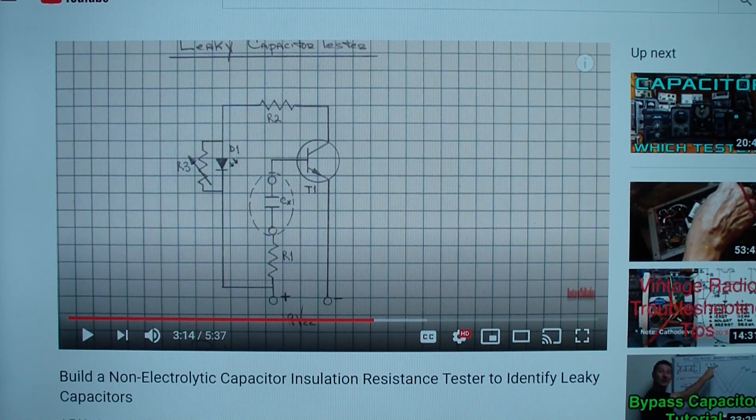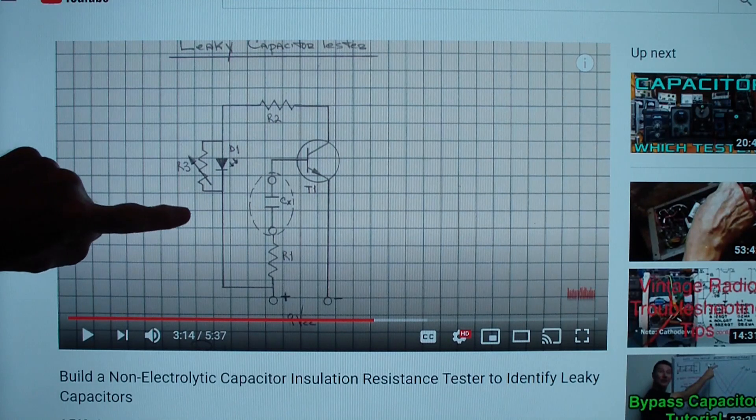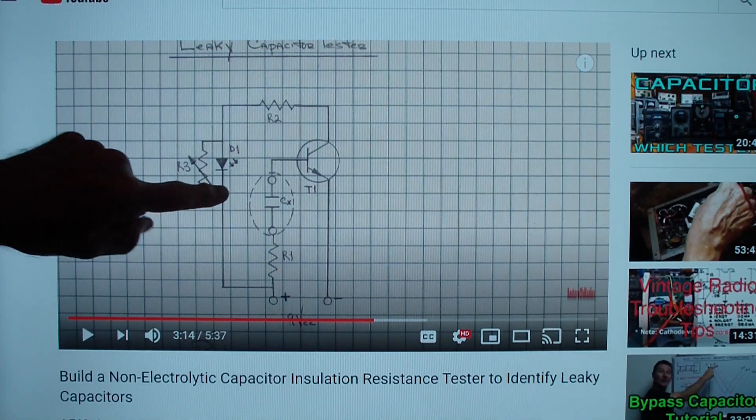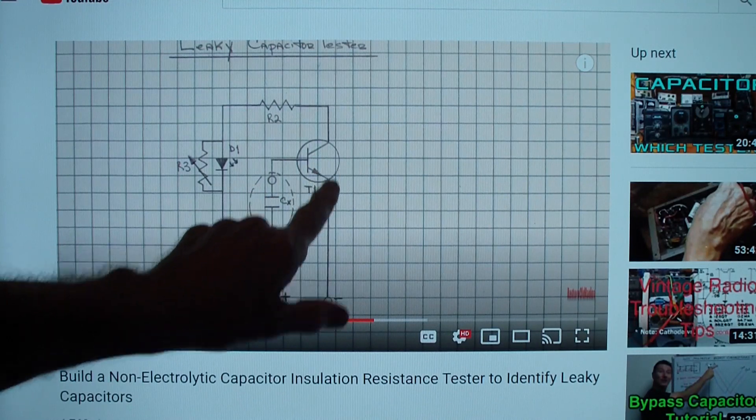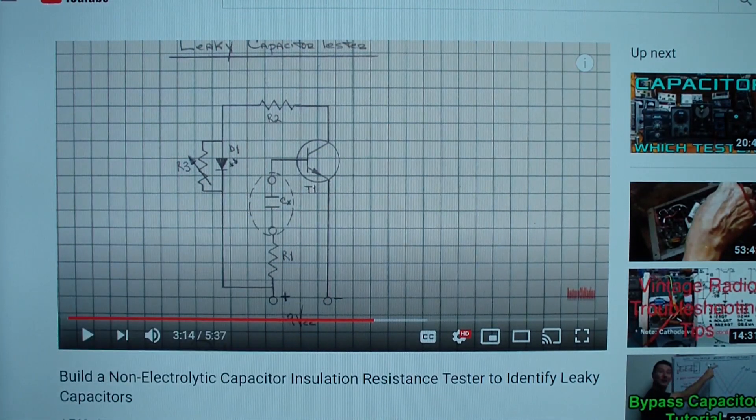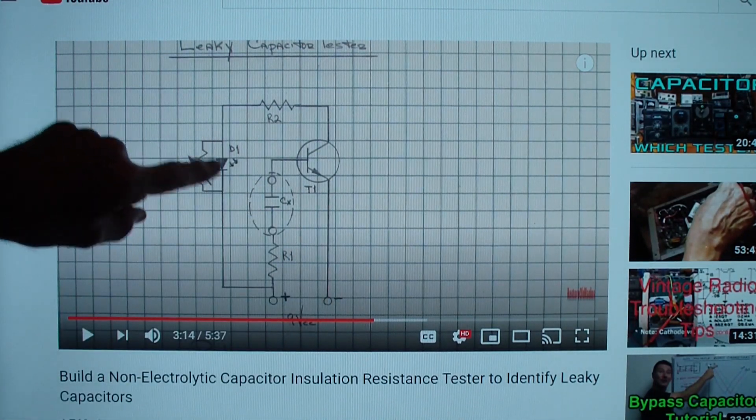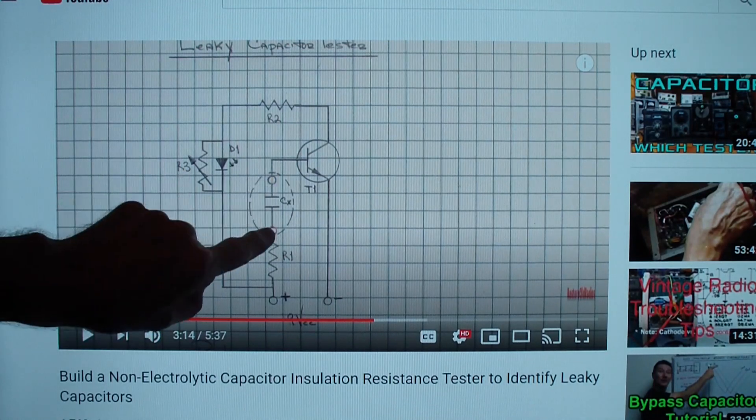This one works by producing a current multiplier using a transistor as a current multiplier to measure the leakage current through this capacitor.